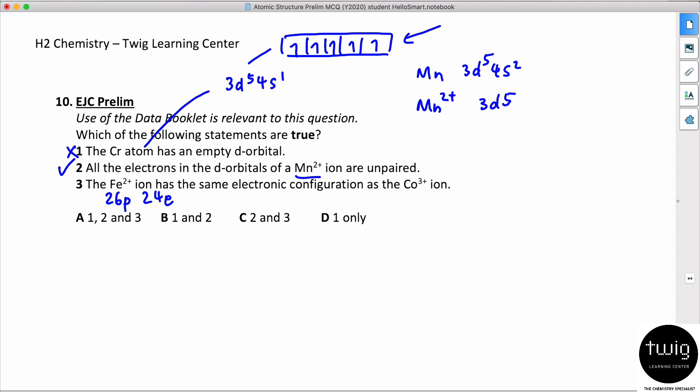For cobalt, cobalt actually has 27 protons, so it's 3+, which means it has 24 electrons. So it seems that both of them have the same number of electrons, they should also have the same electronic configuration. So the answer for this is two and three. That's for question 10.